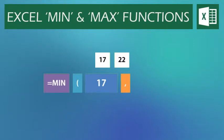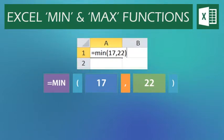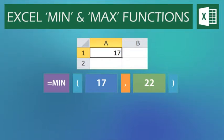The next part of the formula is the second value, in this case 22. Then we close the brackets to finish the formula. The MAX function works in exactly the same way, only this time it's going to tell us the higher of the two numbers.